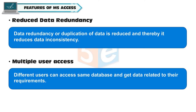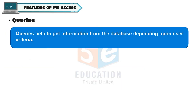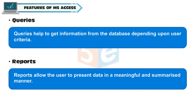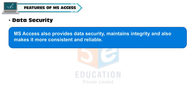Data redundancy or duplication of data is reduced, and thereby it reduces data inconsistency. Different users can access the same database and get data related to their requirements. Queries help to get information from the database depending upon user criteria. Reports allow the user to present data in a meaningful and summarized manner. MS Access also provides data security, maintains integrity and makes it more consistent and reliable.